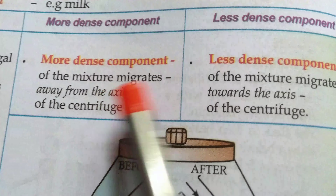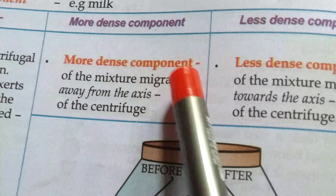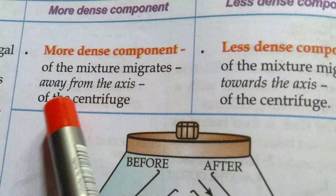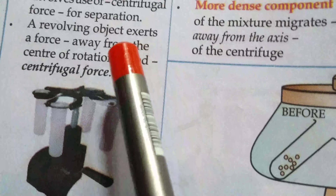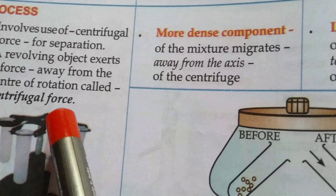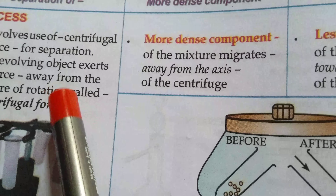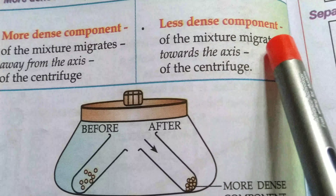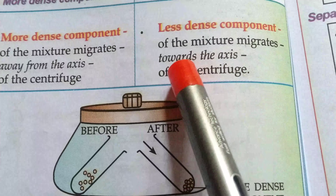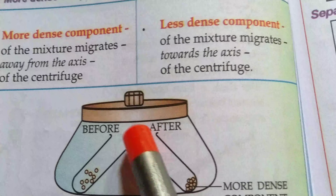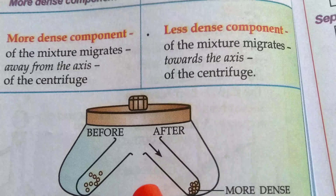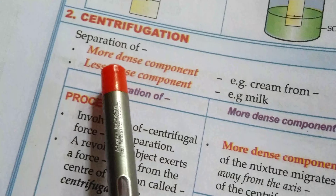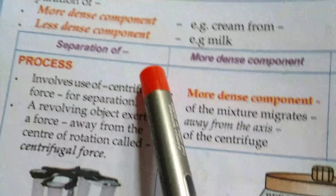More dense component of the mixture migrates away from the axis of centrifugation, while the less dense component migrates towards the axis of centrifugation. In this way we can separate out the more dense component from the less dense component.